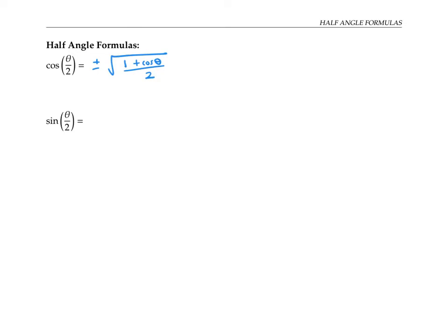To figure out whether to use plus or minus, you need to know something about what quadrant the angle theta over two is in. If you're expecting cosine theta over two to be negative, then you're going to need the negative sign. If you're expecting this cosine to be positive, then you want the positive sign, since the square root of something is always positive. Notice that this formula always makes sense, because the inside of the square root sign is always going to be positive or zero, since cosine theta can't be any more negative than negative one.